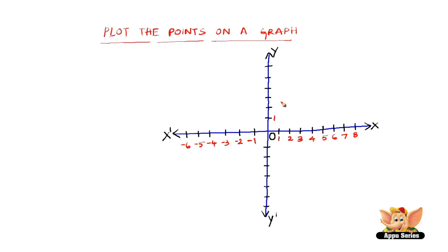You know this is the positive y axis, so it is 1, 2, 3, 4, 5, 6 and the negative y axis is minus 1, minus 2, minus 3, minus 4, minus 5, minus 6, minus 7.